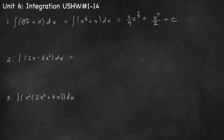Number 2, we don't have to simplify this first. We can go ahead and integrate: the antiderivative of 2x — we increase the exponent by 1 and divide by the new exponent, and 2 over 2 simplifies to 1. Minus 3x: we increase the exponent by 1 and divide by the new exponent. So our answer is x squared minus x cubed plus c.